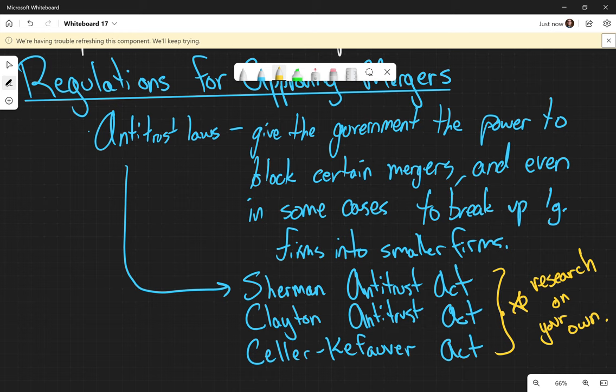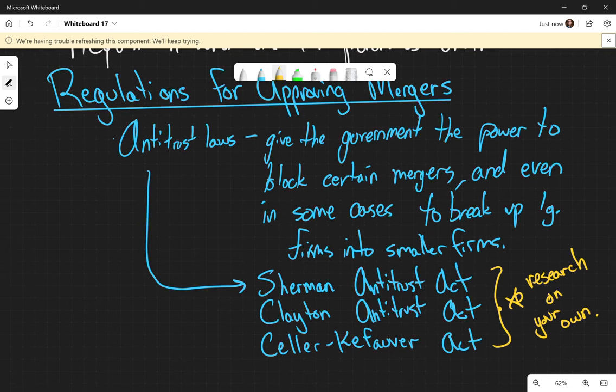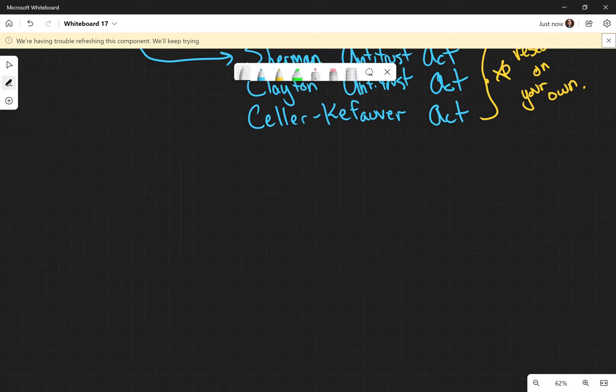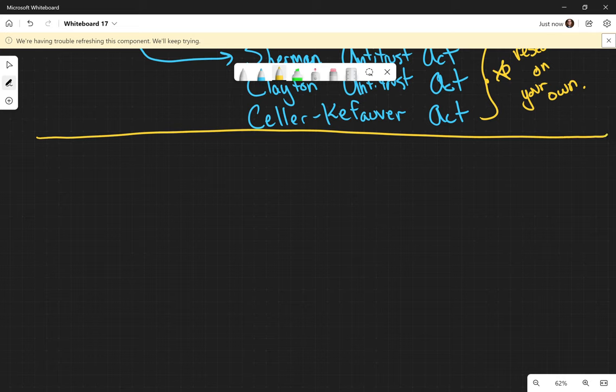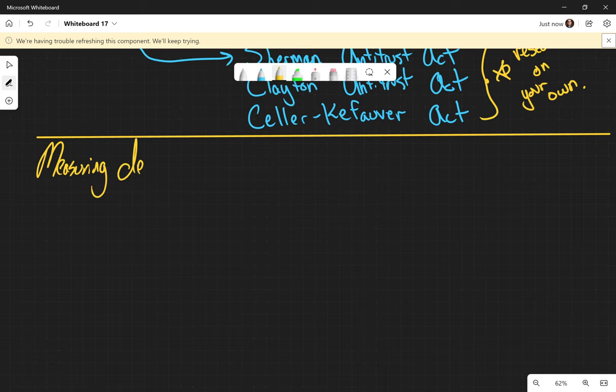So there's two ways for the different regulations on approving mergers. There's the old way and the new way. So we're still going to talk about the old way, but then we'll also discuss the new way as well. So let's first talk about the old way of measuring the degree of monopoly power.